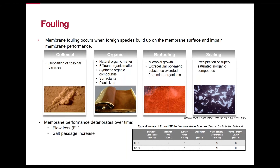Fouling is the primary concern in RO systems and is inevitable to a certain extent, since total elimination of foulants is not possible. Each contaminant can be partially removed with pre-treatment, and fouling tendency can be managed with proper system design. Even systems that have been fouled or scaled can have performance restored through cleanings, but a certain amount of irreversible flow loss is expected.